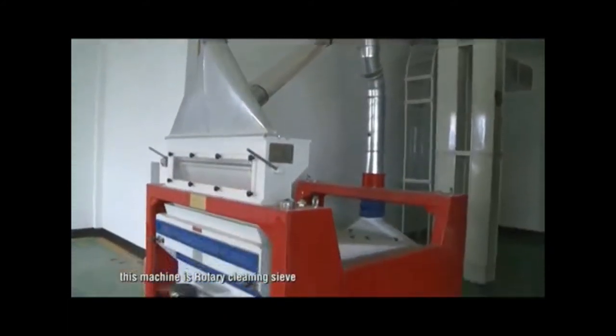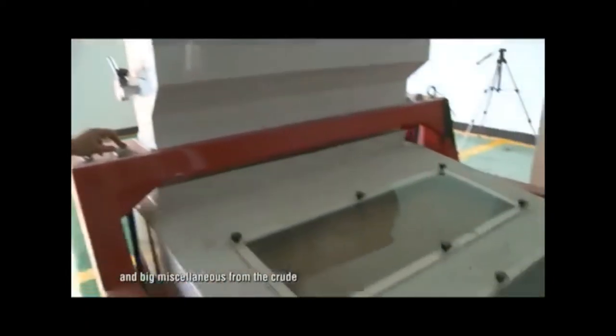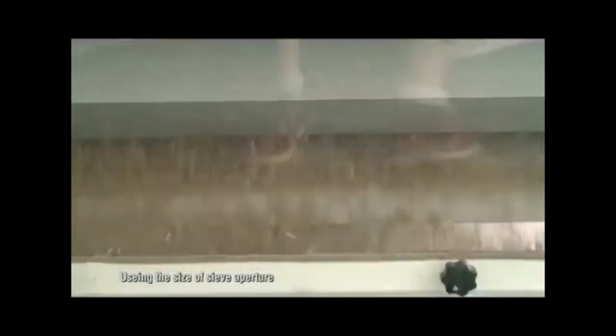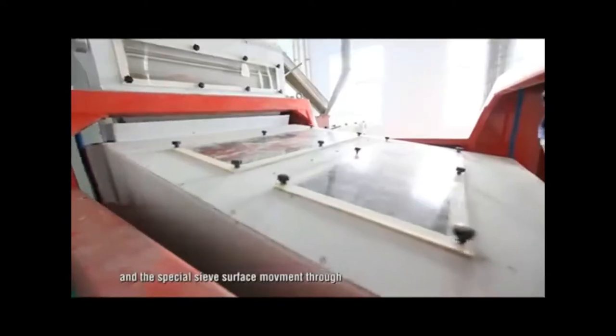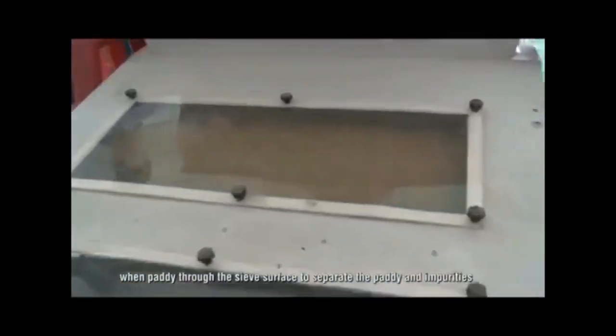This machine is rotary cleaning sieve. Main function is to clear the light and the big miscellaneous from the crude. Using the size of the sieve aperture and the special sieve surface movement, throw paddy through the sieve surface to separate the paddy and impurities.